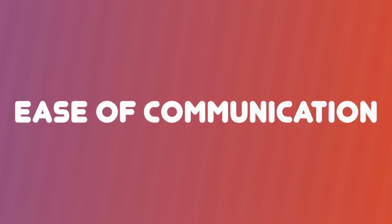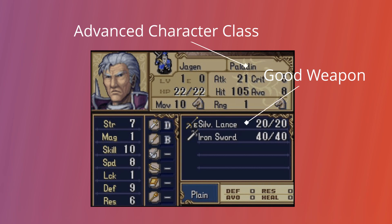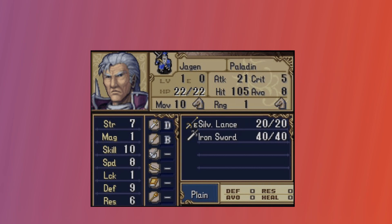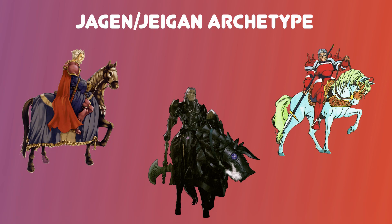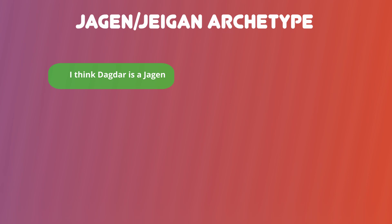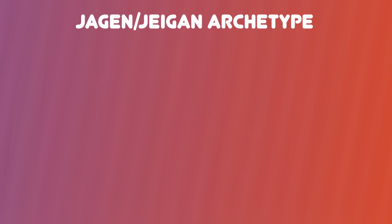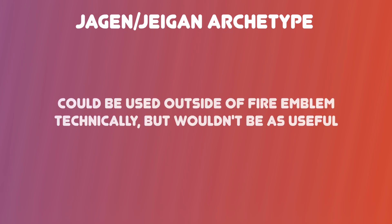Archetypes also provide a common ground in communication about a game. One good example is the Jagen archetype from the Fire Emblem franchise — named after the original member of the category. It applies to a character that starts out more powerful than the rest of your team but doesn't really scale well, and tapers off by the time endgame comes. Narratively, they are most likely older men, sort of mentor figures to the younger generation. But what's important is that I can use a single word — Jagen — to explain their mechanical benefits and difficulties to a fellow player by tapping into their existing knowledge, even when talking about a different character, possibly from an installment my conversation partner is unfamiliar with. The Jagen is also interesting because it shows an example of a franchise-specific archetype; you can also have genre-specific ones, like archetypes that only appear in RPG games.